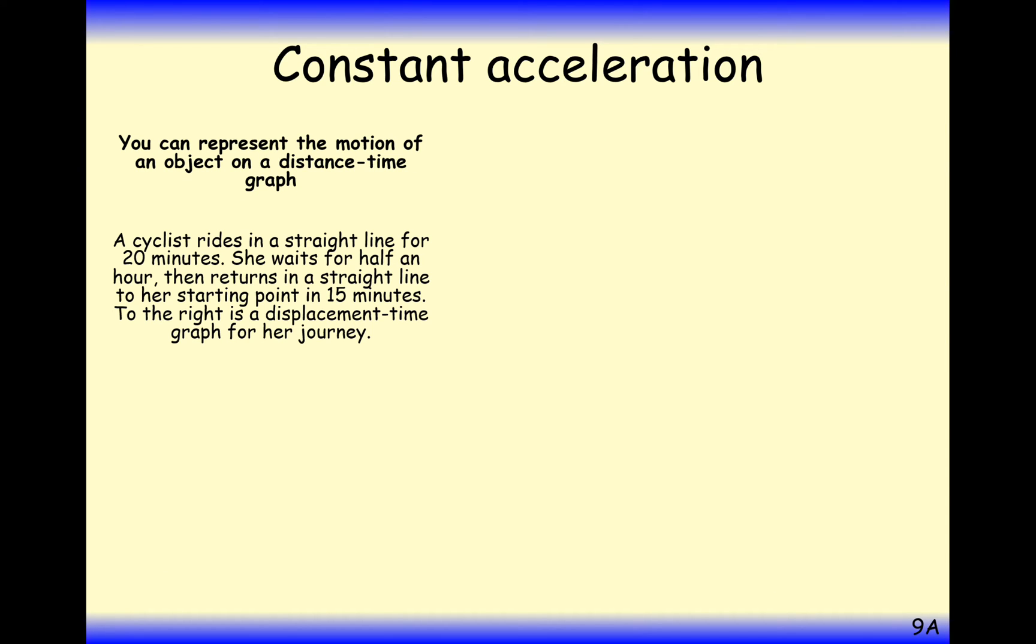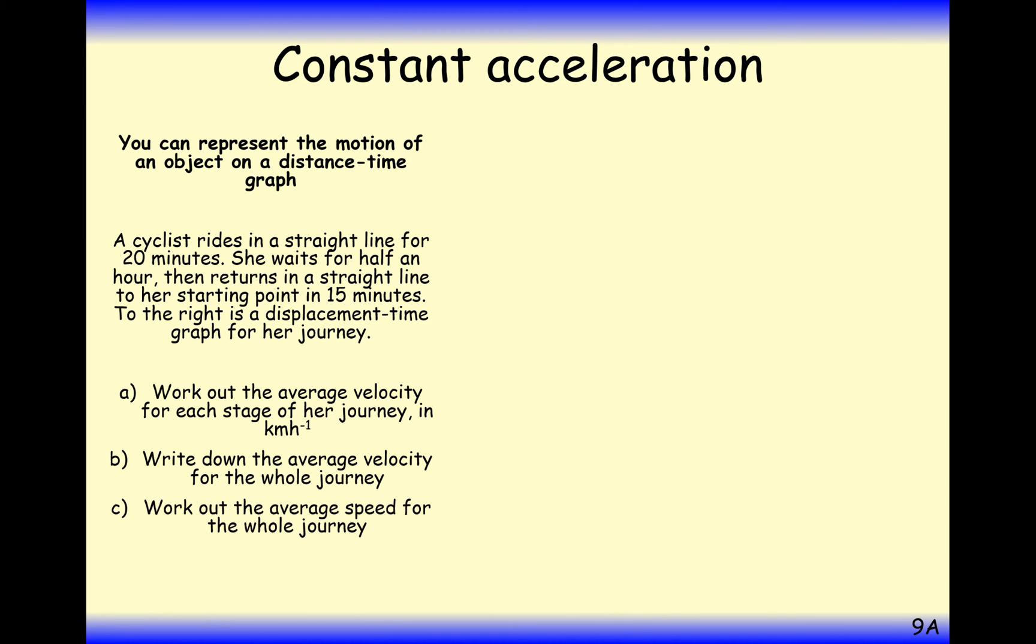Let's go through a few questions. A cyclist rides in a straight line for 20 minutes. She waits half an hour and then returns in a straight line to her starting point in 15 minutes. To the right is a displacement time graph showing 20 minutes traveling five kilometers, stationary for half an hour, and then she goes back to where she started from in 15 minutes. The first part of this question is work out the average velocity for each stage of her journey.